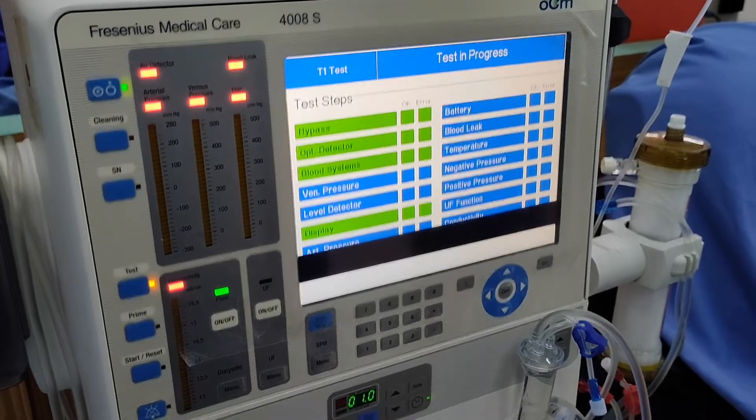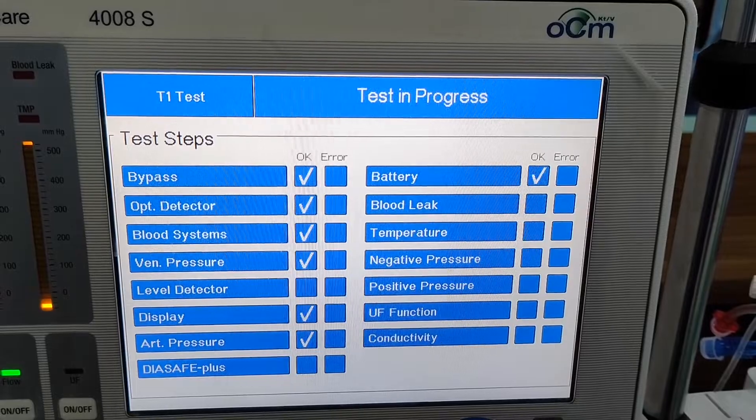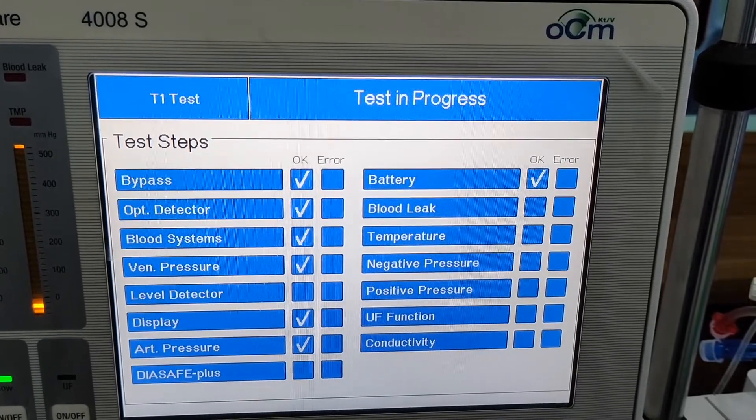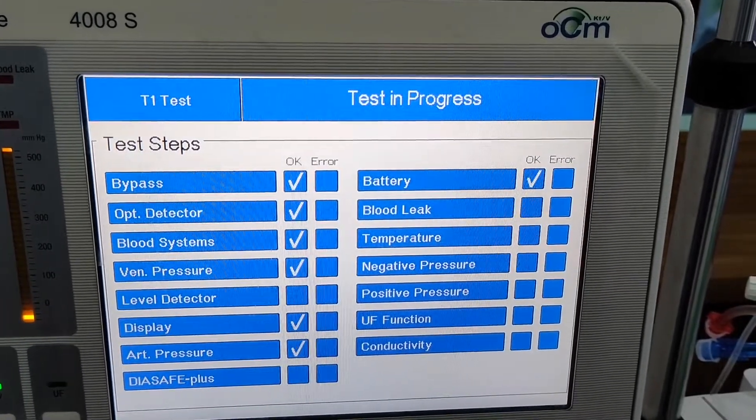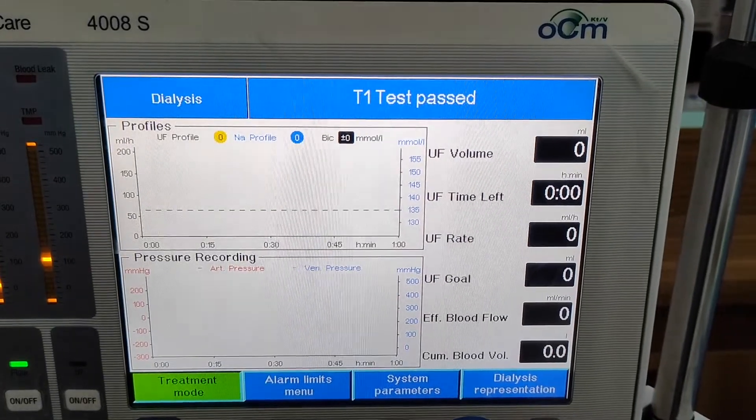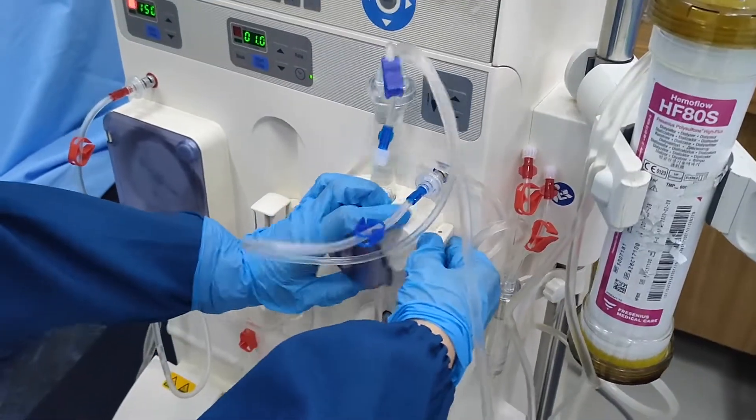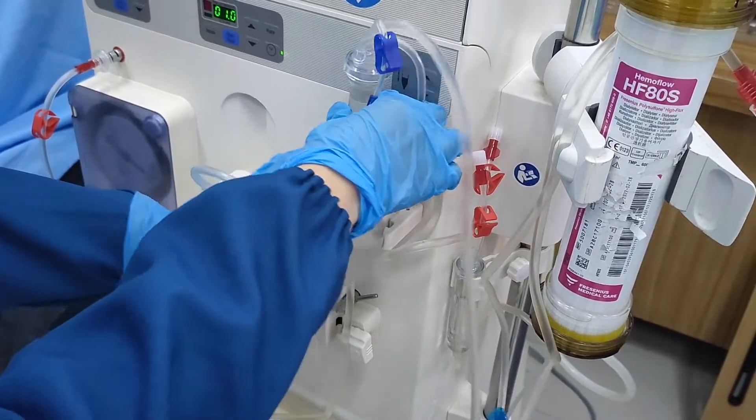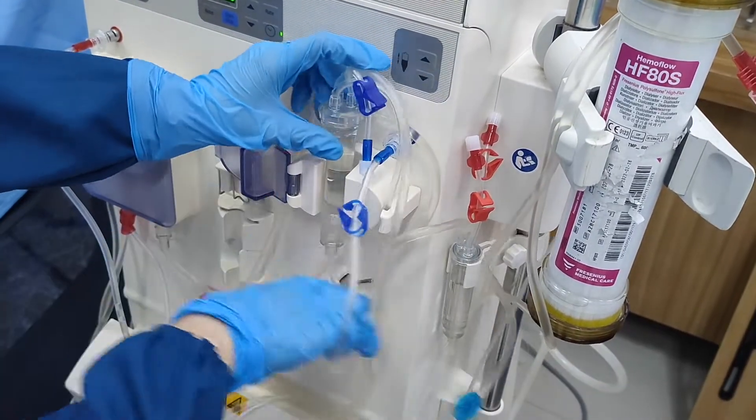Always perform the required T1 test before the treatment session starts. Never use a machine that has failed in T1 tests. Once the machine passed the T1 test, place the Venus Chamber on the air detector and secure it in place.